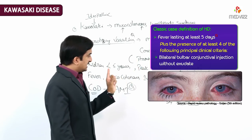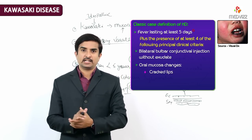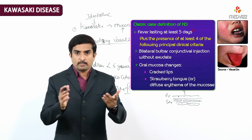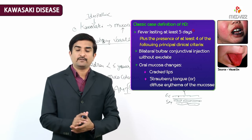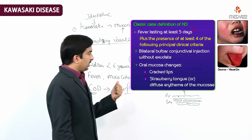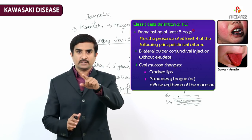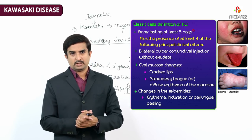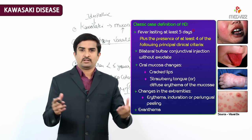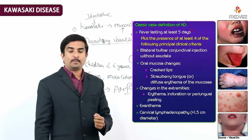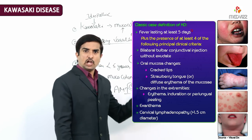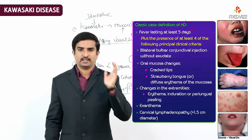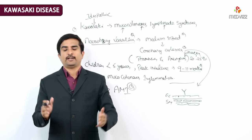Additional presenting features include oral mucosal changes like cracked lips, strawberry tongue, or diffuse erythema of the mucosae. Changes in the extremities such as erythema, induration, or peeling of the skin are also seen, along with a widespread rash called exanthem. Lastly, cervical lymphadenopathy greater than 1.5 centimeters in diameter may be present. If all these symptoms are seen along with fever, it is the diagnosis of Kawasaki disease.